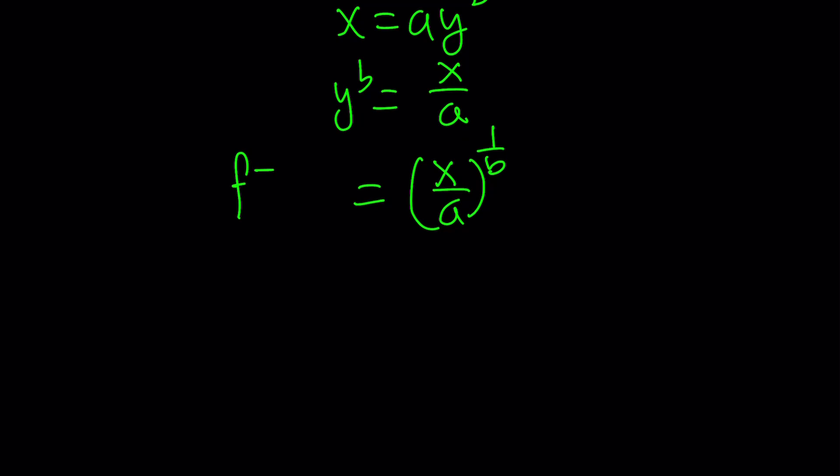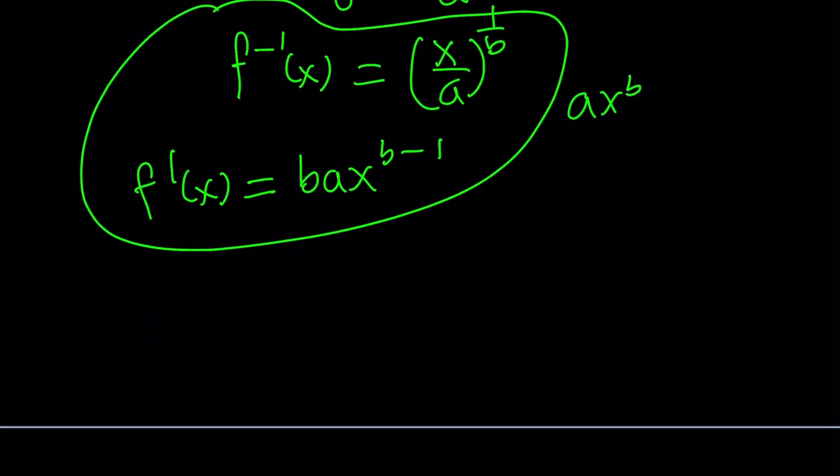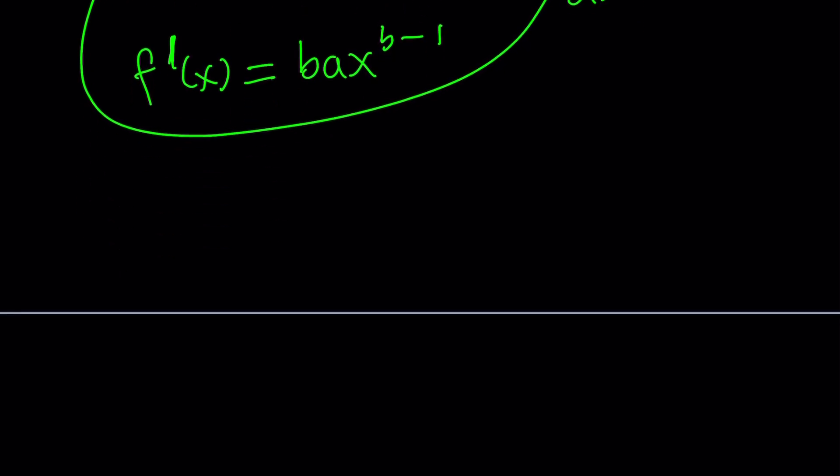And, now, I want it to equal f prime. But, what is f prime? If f is ax to the b, f prime is going to be b times a times x to the power b minus 1. So, we want these two things to be equal. And, that makes a lot of sense. Because, we are dealing with power functions. The derivative and the inverse are both power functions. We could probably just call it a power function. Let's go ahead and set them equal to each other and see what happens.